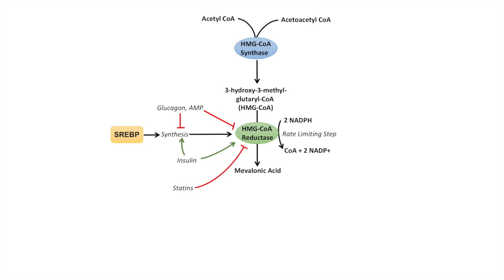Once mevalonic acid is produced, it undergoes the mevalonate pathway, which requires three ATP and produces isopentanyl pyrophosphate. Six isopentanyl pyrophosphates are then used to produce squalene. Squalene is processed through a few reaction steps into lanosterol, and lanosterol is processed via many different reaction steps into cholesterol. An easy way to remember these important intermediates is M-I-S-L-C: mevalonic acid, isopentanyl pyrophosphate, squalene, lanosterol, and cholesterol.